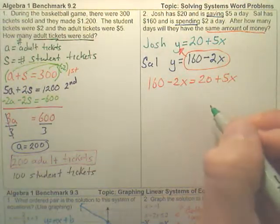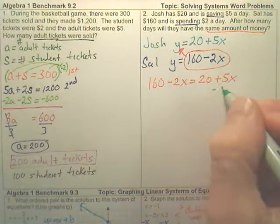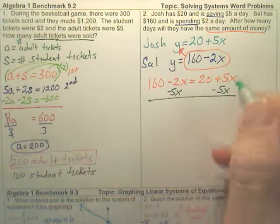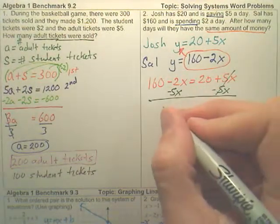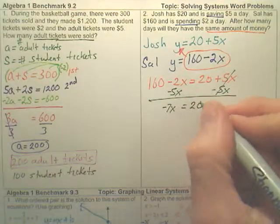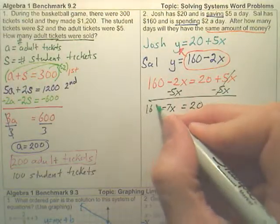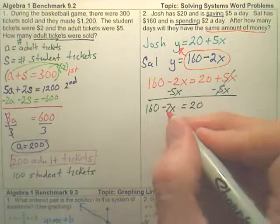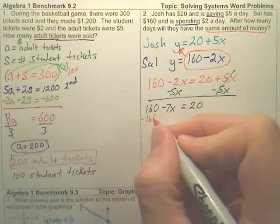So to solve this, I'm going to minus the 5X over first. That's gone. Looks like a negative 7X there. Equals 20 and, oh, don't forget the 160 still there. And then I've got to get the X by itself, so I'm going to minus 160 over.